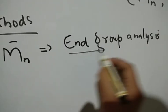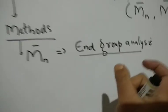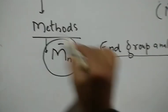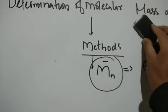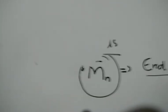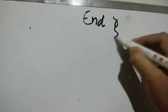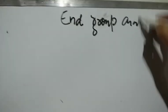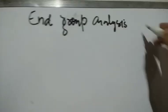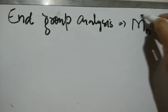Today's topic is end group analysis. It's a method by which we can calculate the number average molecular weight of polymers. This is a concise, concept-based approach so we can cope with any type of exam — short answer or major concepts — in a short amount of time.